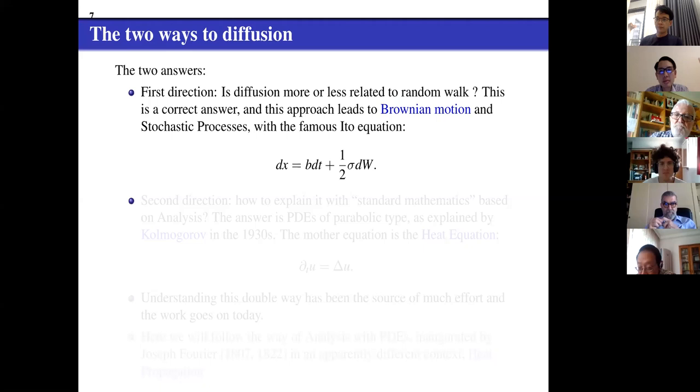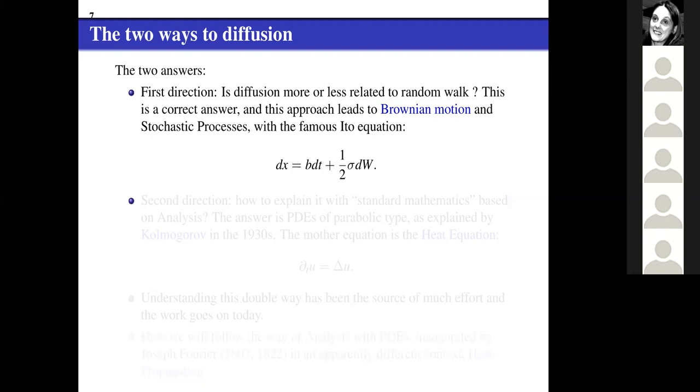There is a famous Ito equation that says that the particle moving through a random medium dx responds to the passage of time through two terms, one of them is BdT which is just the deterministic drift and another one is sigma dw and this is the Brownian part. dw is the Wiener process and then you go and study the stochastic processes and you see the particles go around, but then in analysis we don't do that.